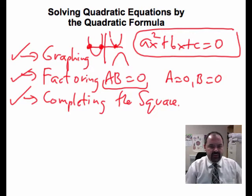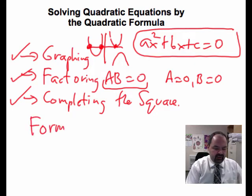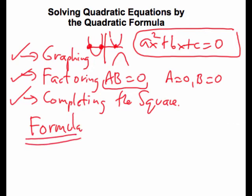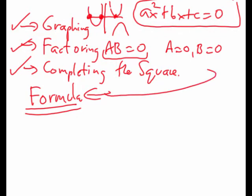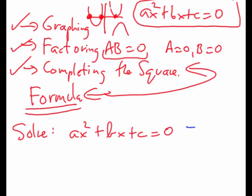Completing the square is fine, but sometimes it gets a little complicated. So the fourth and final method we're going to look at is an actual formula that will give us the solutions to a quadratic equation. The formula comes from the process of completing the square. I'm going to show you where this formula comes from by solving for x in the general quadratic equation, doing that by using the process of completing the square — just as I did in the last video, but now with a, b, and c as general constants.